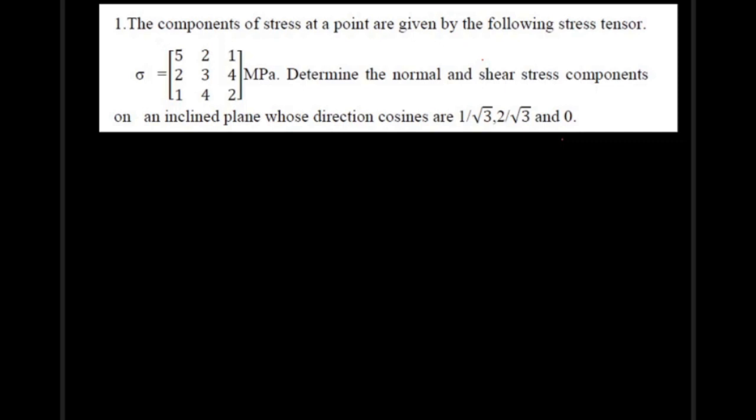The components of stress at a point are given by the following stress tensor: sigma equals the stress matrix [5, 2, 1; 2, 3, 4; 1, 4, 2] in megapascals. Determine the normal and shear stress components on an inclined plane whose direction cosines are 1/√3, 2/√3, and 0.